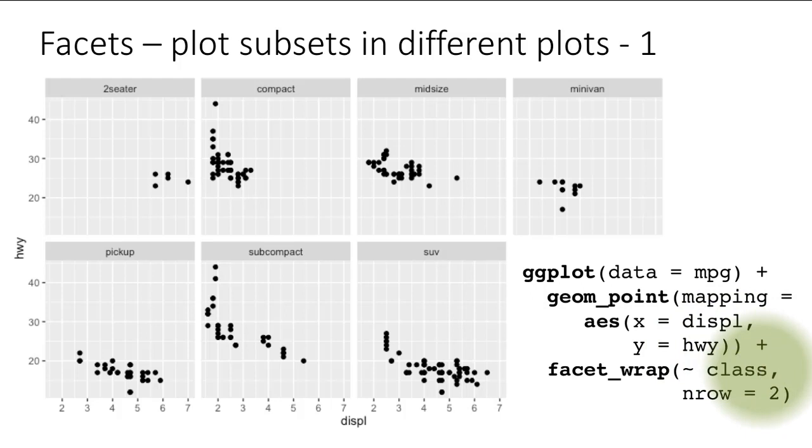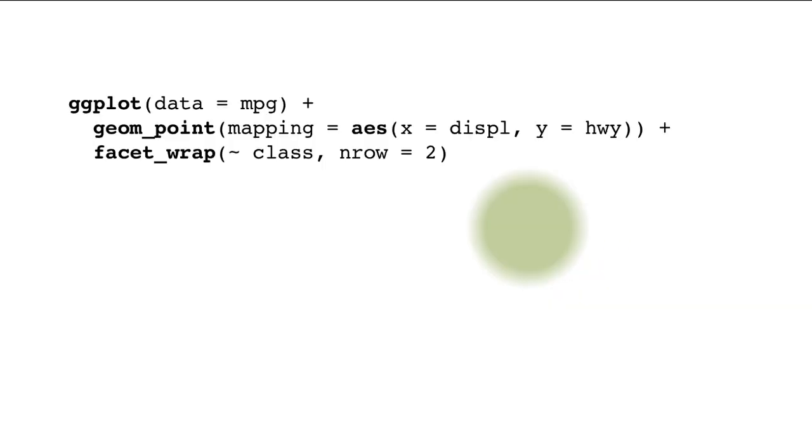Create each facet based on the value of class. For every different value of class, the system will generate a different plot. What plot is it going to generate? Exactly what we have defined before. We would have got one big scatter plot, but now that we have added facets, we'll get a separate scatter plot for each value of class. That's how simple it is to get facets in ggplot.